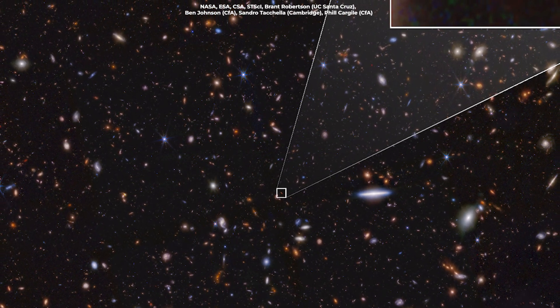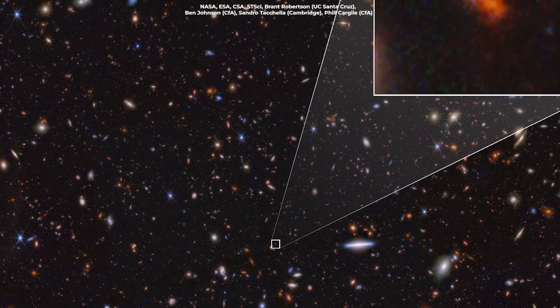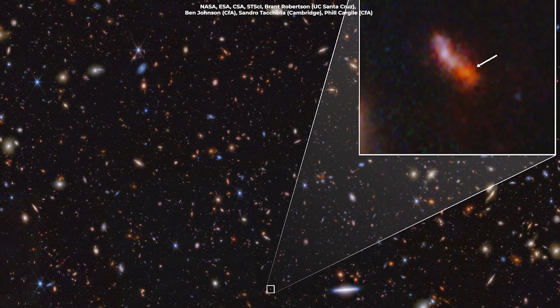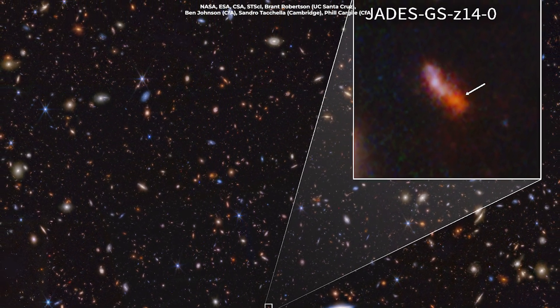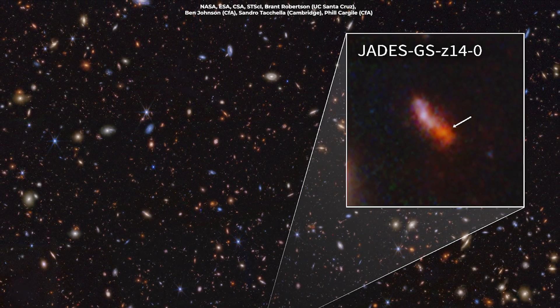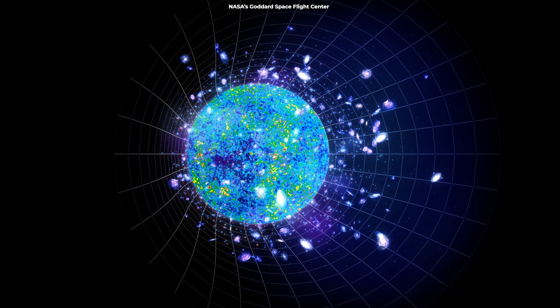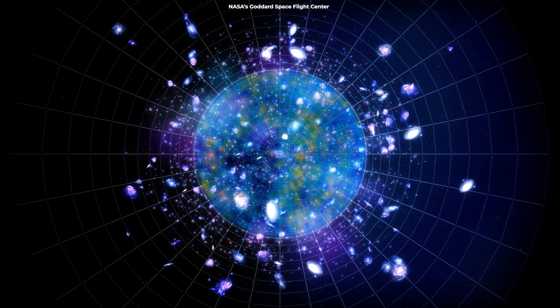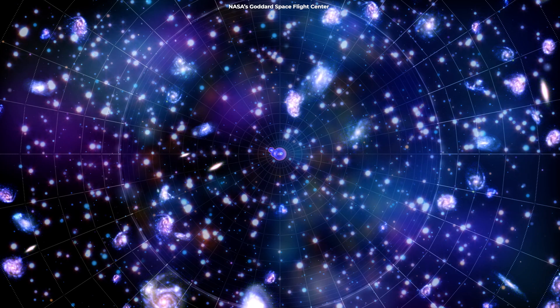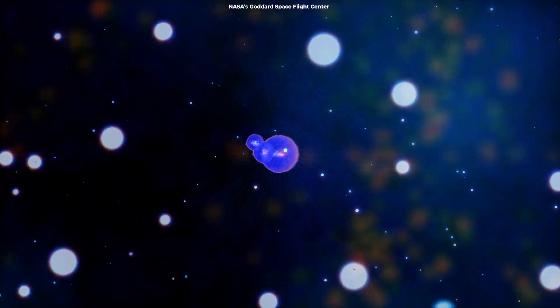The light we see from this galaxy has journeyed through the cosmos for over 13 billion years, traveling across unfathomable distances to finally reach the Webb telescope and conclude its epic voyage. This galaxy existed at a time when the universe was just 3% of its current age. By observing these ancient objects, we get a snapshot of what the cosmos was like shortly after its formation, and how the first structures in the universe formed and evolved over time.